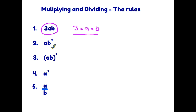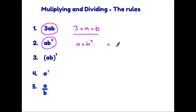Now let's have a look at rule two. This is ab². When we have a term like this we have to realise that the squared only applies to the b. So what we actually have here is a times b squared. Now we know that b squared means b times b, so in fact this term ab² is actually a times b times b.